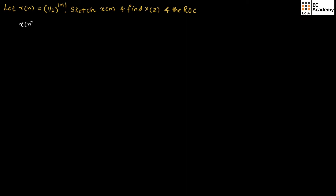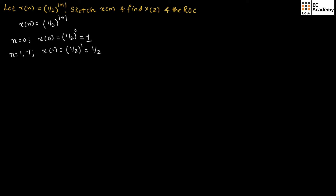X of n is given as 1 by 2 whole to the power of magnitude of n, so n can take both positive and negative values. When n is equal to 0, X of 0 will be equal to 1 by 2 whole to the power of 0, which is equal to 1. When n is equal to 1 as well as minus 1, since we have magnitude of n, X of 1 equals 1 by 2 and X of minus 1 also equals 1 by 2.